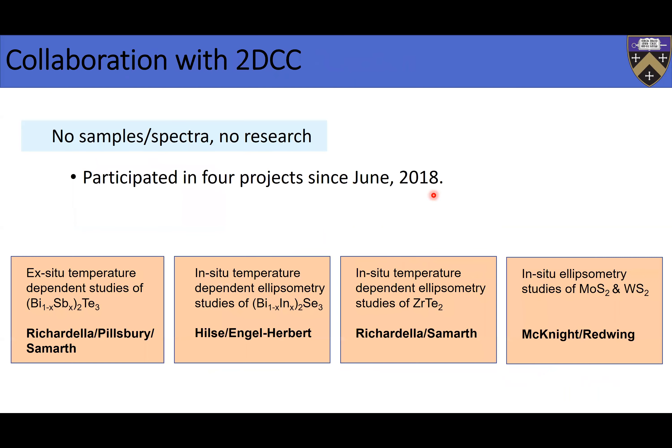I wanted to say something about my relationship with the 2DCC. I've been working with you folks since 2018. I've worked with Anthony and Nitin on several samples — bismuth antimony telluride and zirconium telluride. I'm going to talk about bismuth selenide stuff that I've worked with Maria and Roman. I'm also currently working with some TMDs that John and Tom are growing. I've done a lot of ellipsometry with samples coming out from the 2DCC.